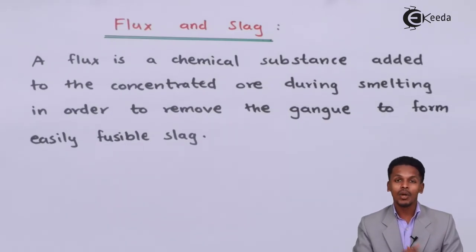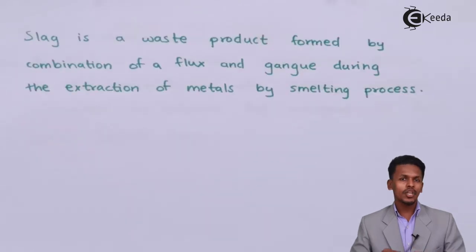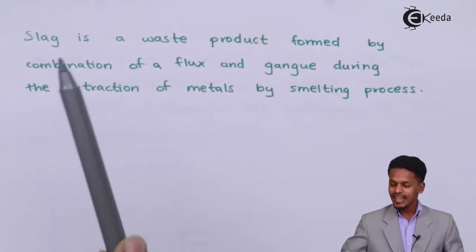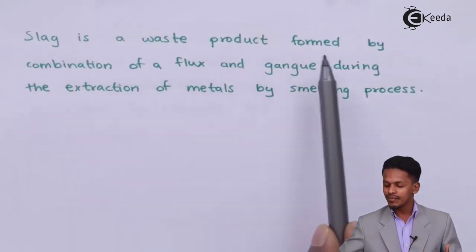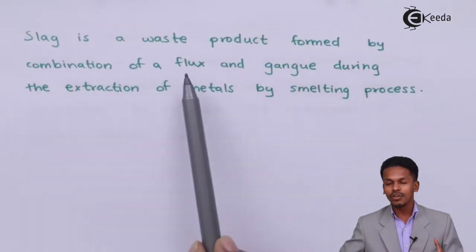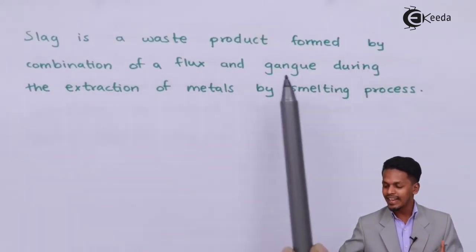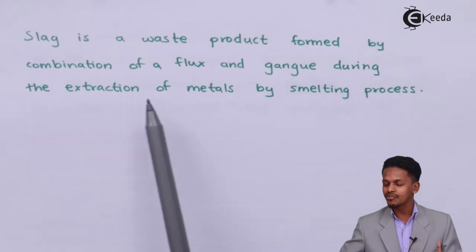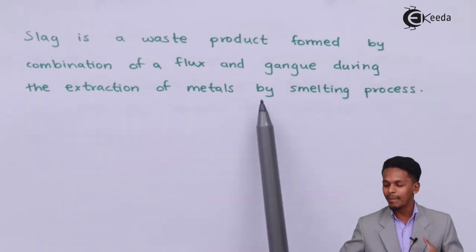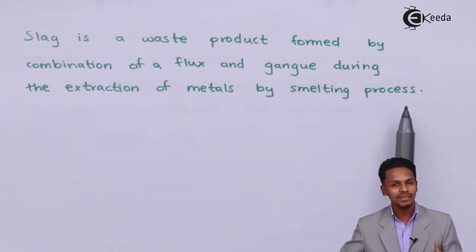Slag is a waste product formed by the combination of a flux and gangue during the extraction of metal by the smelting process.